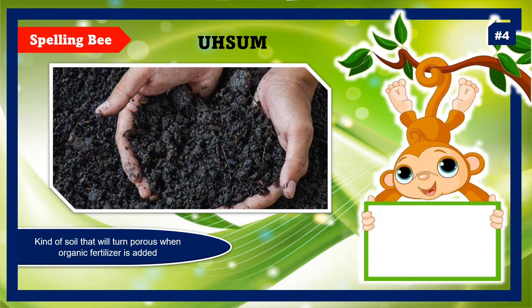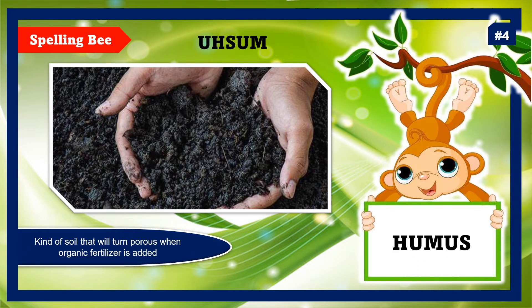Item number 4. Look at the jumbled letters and the picture. Your clue: kind of soil that will turn purist when organic fertilizer is added. The correct answer is humus.